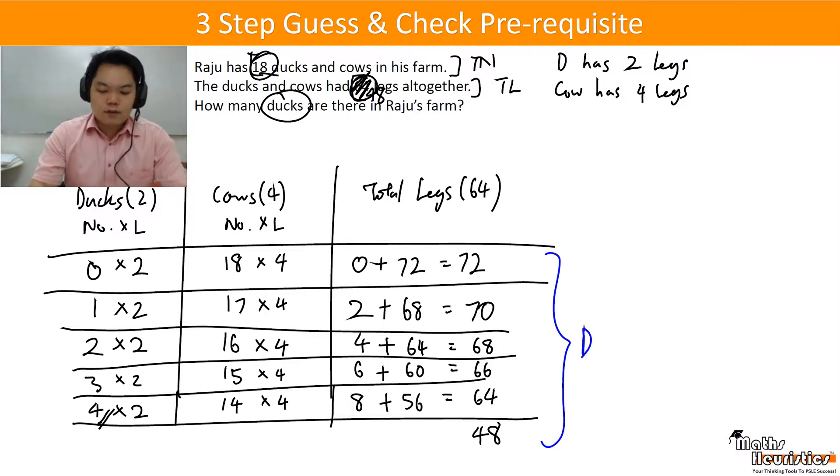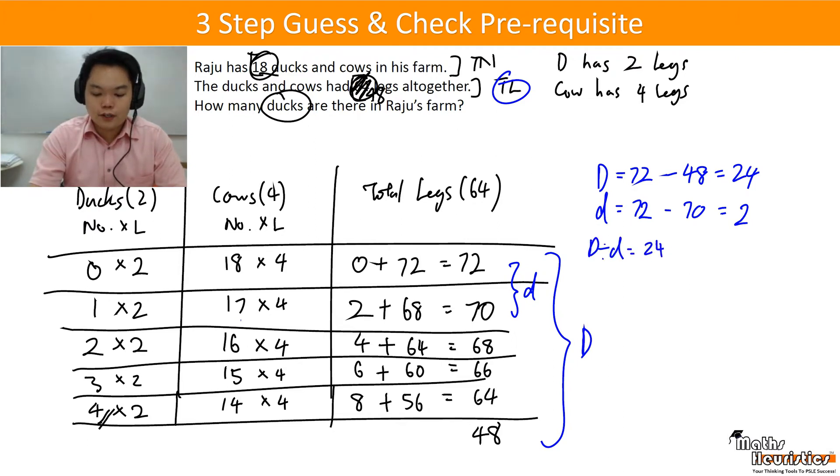So this is what I call the big D. Sometimes it's known as the excess or the shortage. But generally speaking, it is the difference between what you assumed versus what you really have for the total legs or the total value. This is what I call the small D. It's the replacement difference that arises when you make a replacement of one cow for one duck or one duck for one cow. So the big D here is 72 minus 48 and that gives you 24. The small D will be 72 minus 70 and that gives me 2. So the big D divided by small D will be 24 divided by 2 to give me 12.